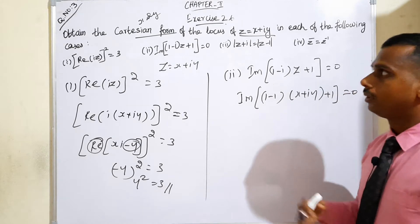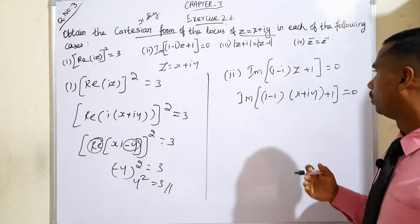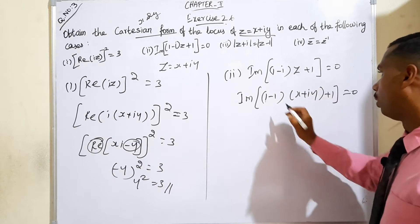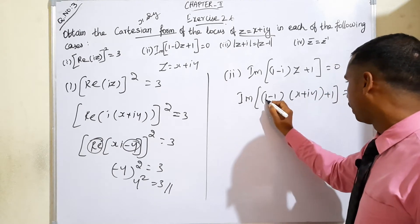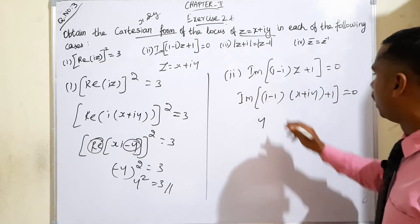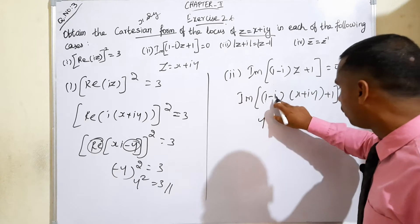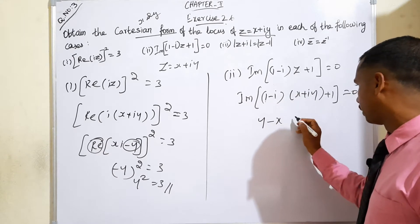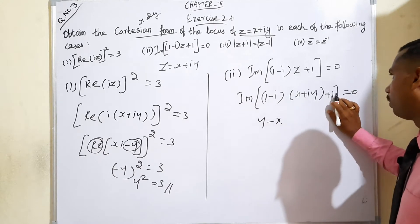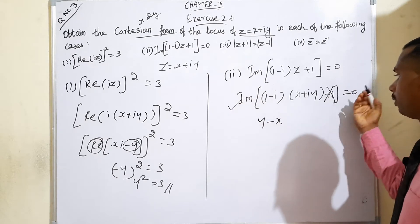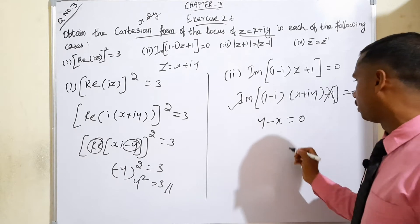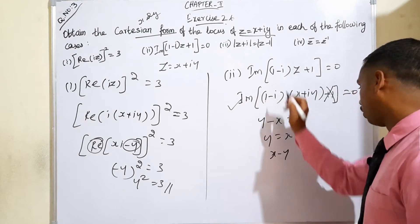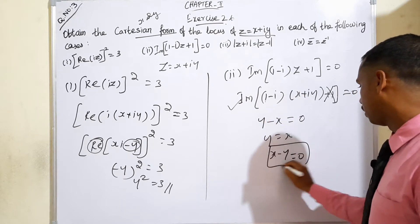As shown in the previous problem, question number 2, we expand (1 minus i)(x + iy + 1). After expanding and collecting the imaginary part, we get y minus x is equal to 0. Bringing x to the opposite side gives the Cartesian form x minus y is equal to 0. This is the answer for subdivision 2.